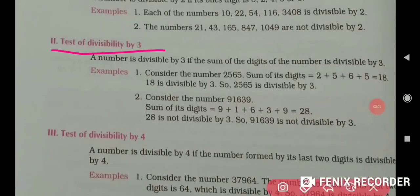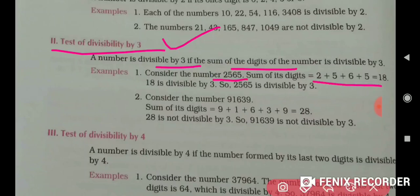Next test — the test of divisibility by 3. How can you check whether a number is divisible by 3 or not? For 3, you have to add the digits. For example, the digits are 2, 5, 6, 5 — just add them.